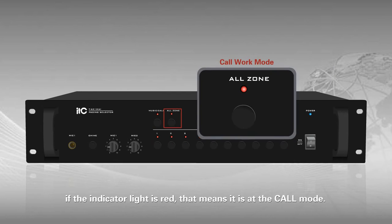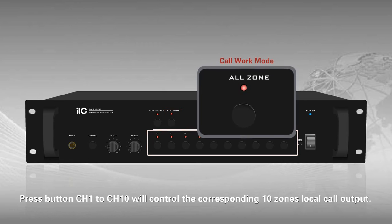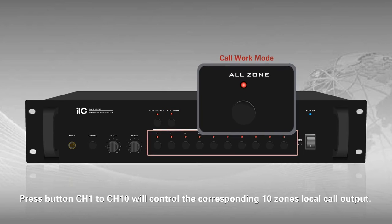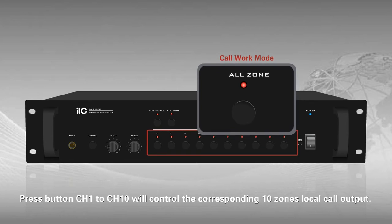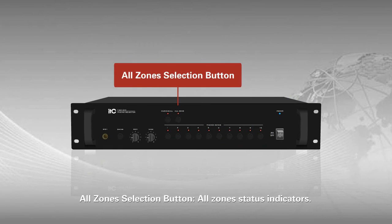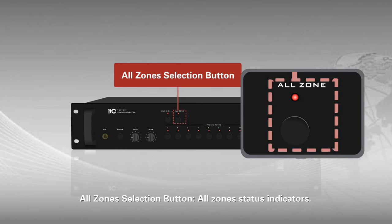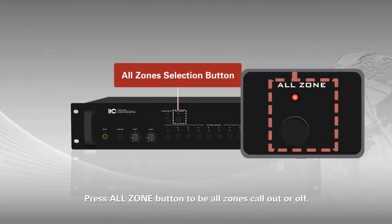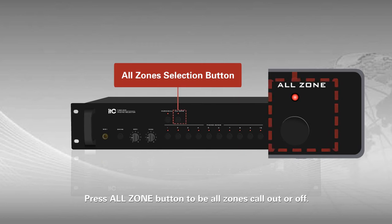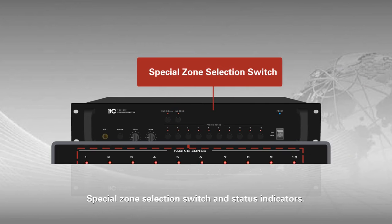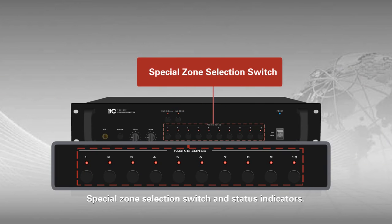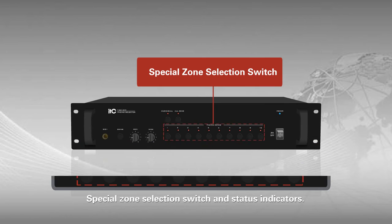If the indicator light is red, that means it is in core mode. Press button CH1 to CH10 to control the corresponding 10 zones' local core output. All-zone selection button and all-zone status indicators: press the all-zone button to call all zones out or off.